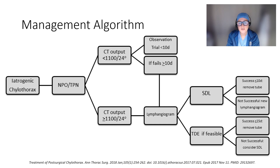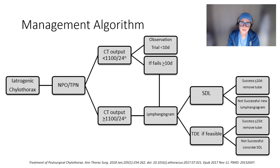Other patients can undergo thoracic duct embolization and, if feasible, can have the tube removed if it has been successful over a 15-day period of observation. If embolization is not successful, those patients should then undergo surgical duct ligation, especially when output is high. Continued observation without intervention in the setting of high output can result in mortality.